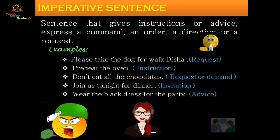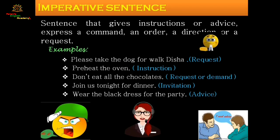Imperative sentences always take the second person for the subject. For example: 'Please take the dog for a walk, Disha' — someone is requesting Disha to take the dog for a walk. 'Preheat the oven' — here someone is giving you an instruction to preheat the oven. 'Don't eat all the chocolates' — this can be a request or a demand. 'Join us tonight for dinner' — here you are inviting someone.